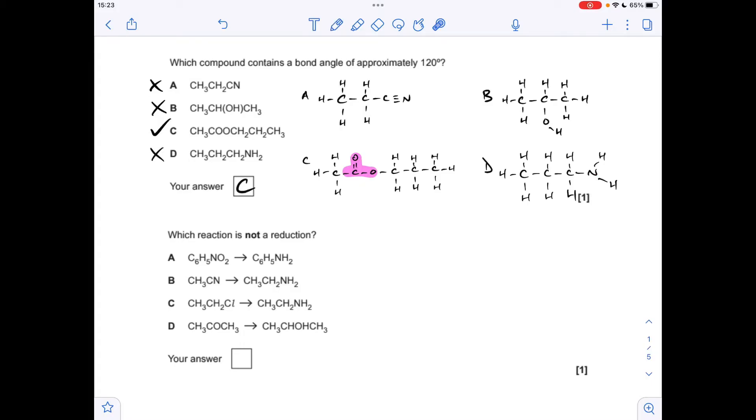Next question. Which reaction is not a reduction? Well, this first one shows the reduction of nitrobenzene. Reaction B shows the reduction of the nitrile group to the amino group. Reaction C is the substitution of this halogen for an amino group. So that's our answer. We'll just do D for revision purposes. What's going on here? We are reducing a ketone to a secondary alcohol.